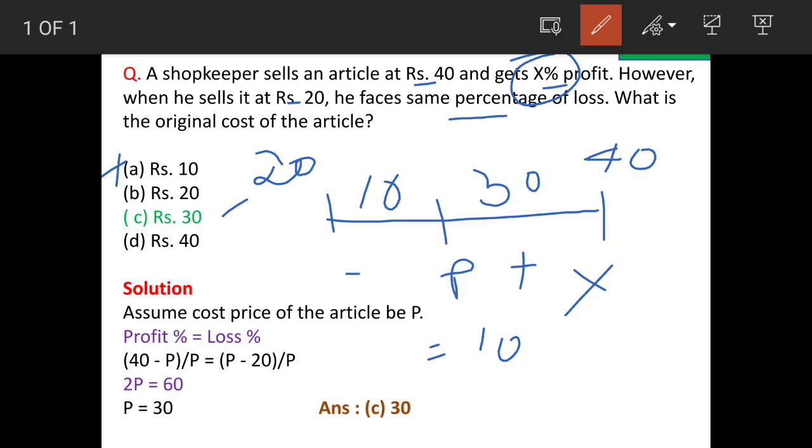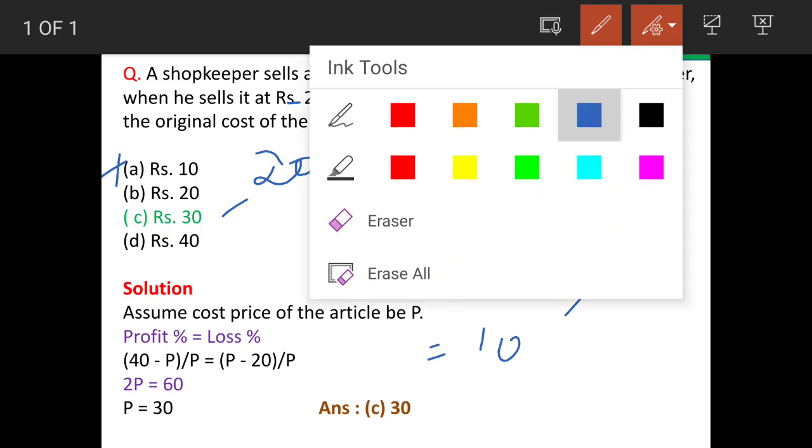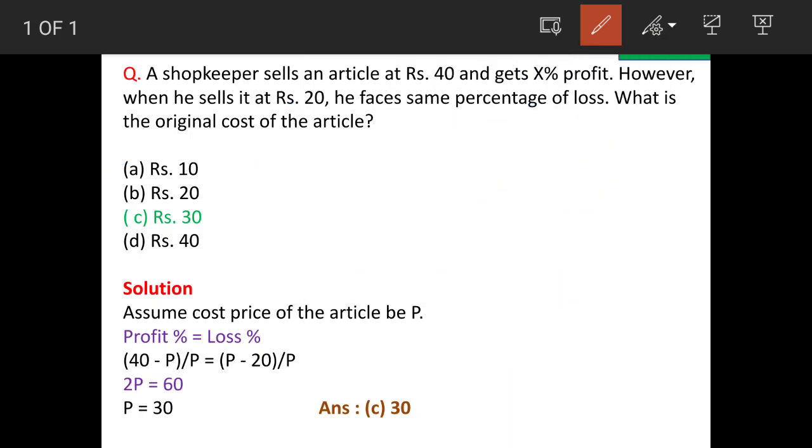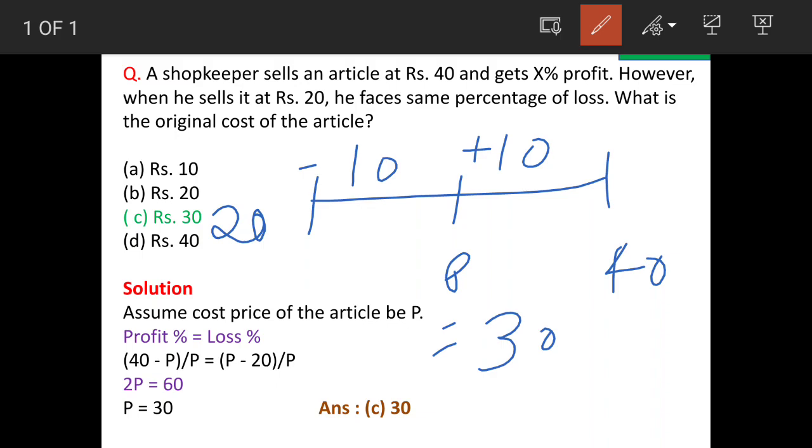Now we try with option C. Let's say price is equal to 30. So when he is selling at rupees 40, he is making profit of 10 rupees. And when he is selling at rupees 20, he is making loss of 10 rupees. So both are equal, hence option C is the correct answer.